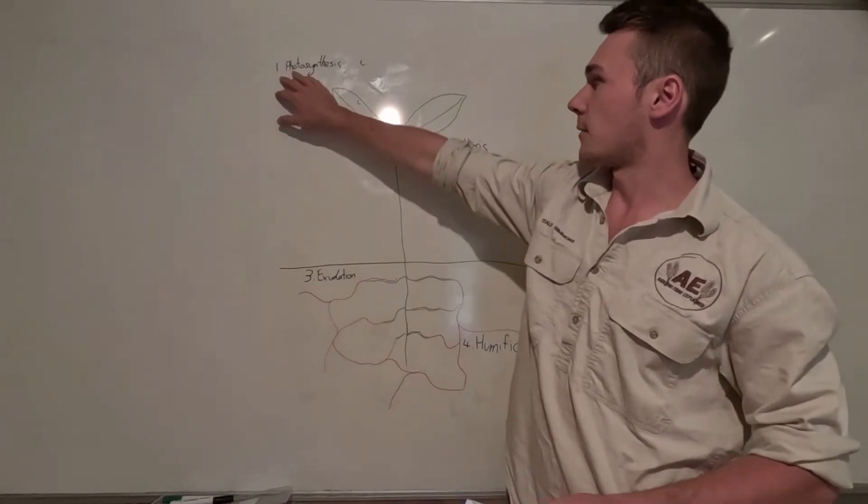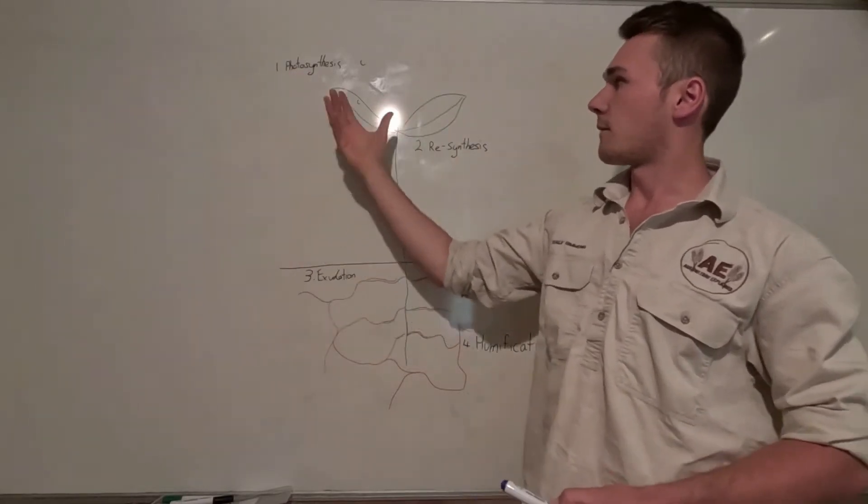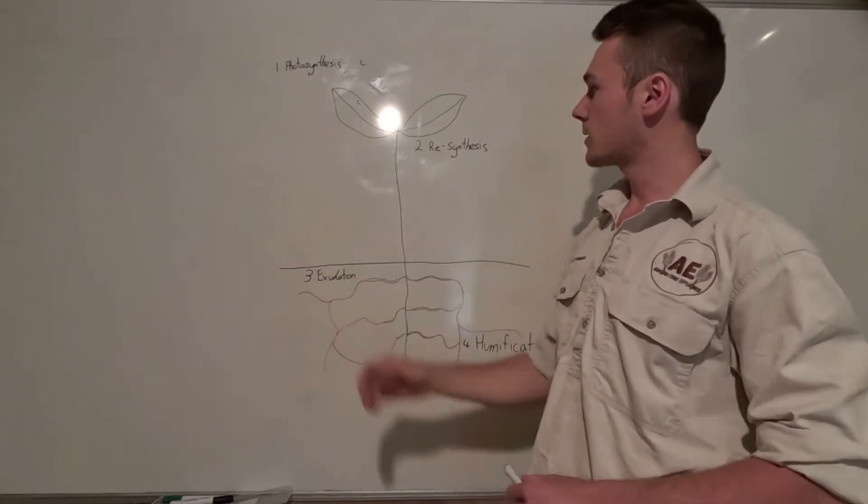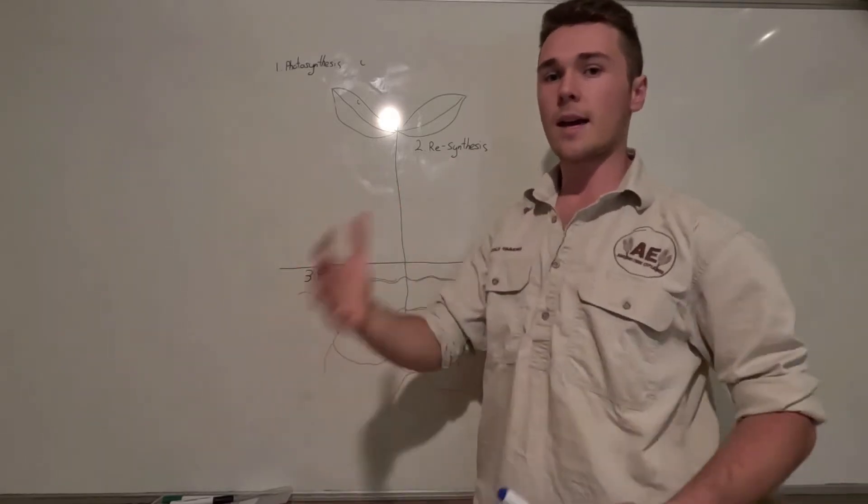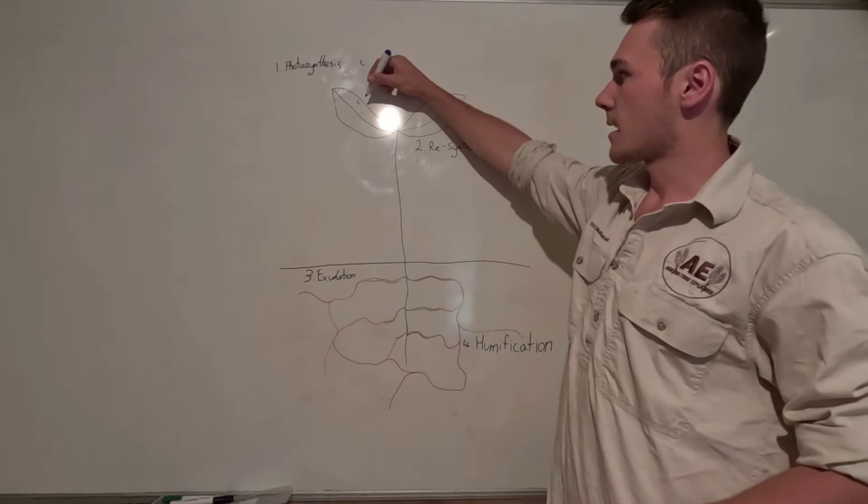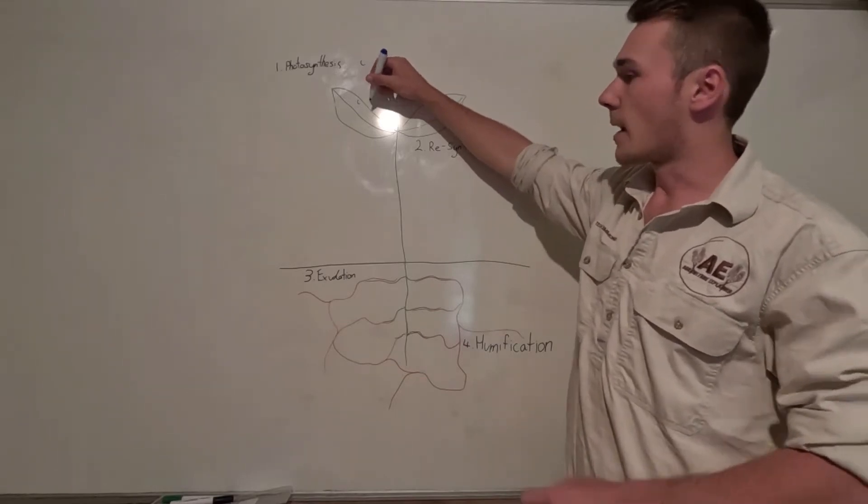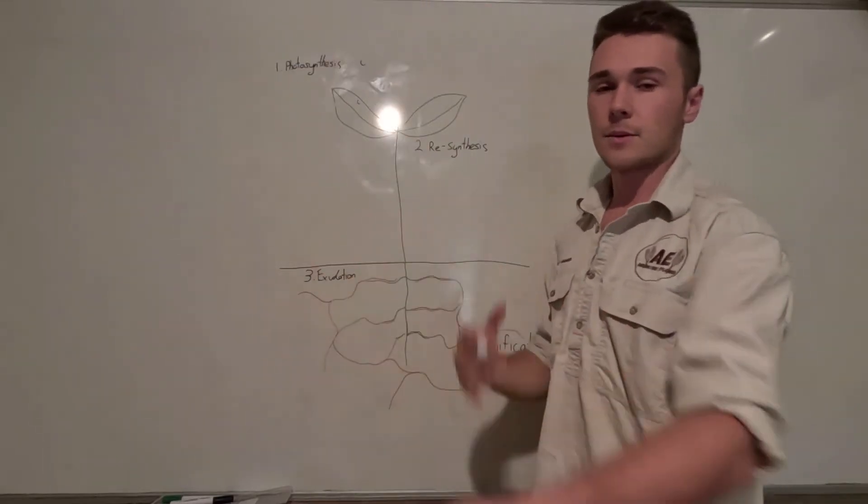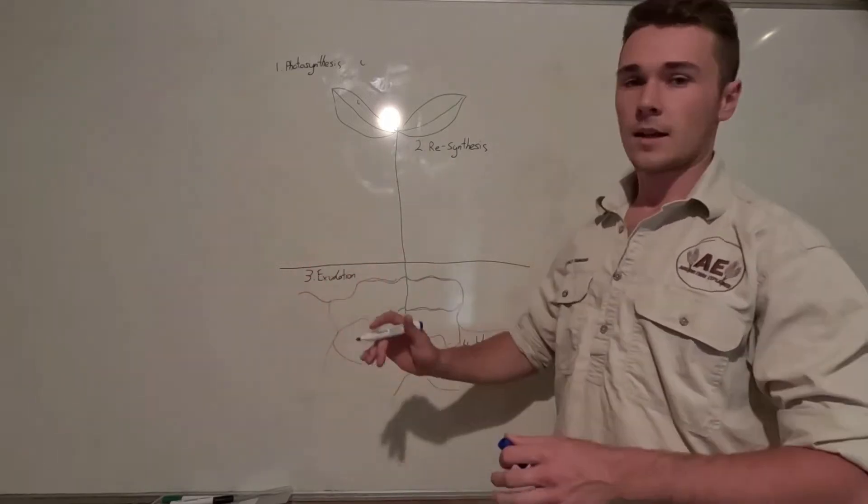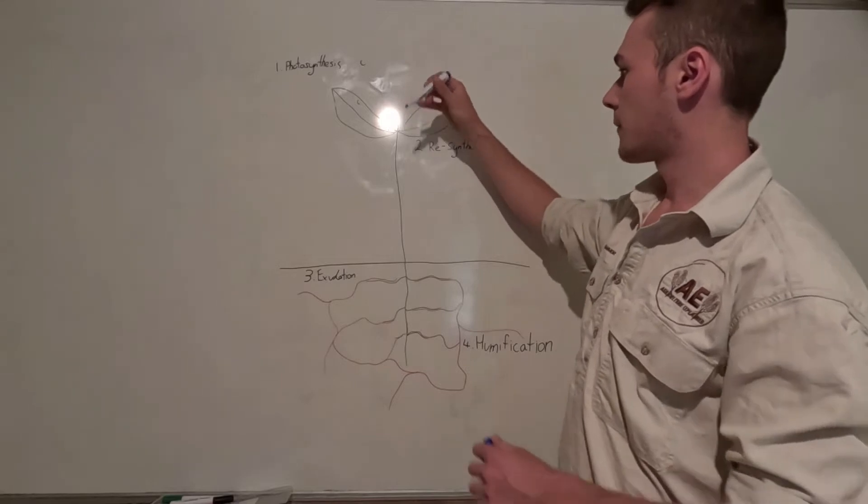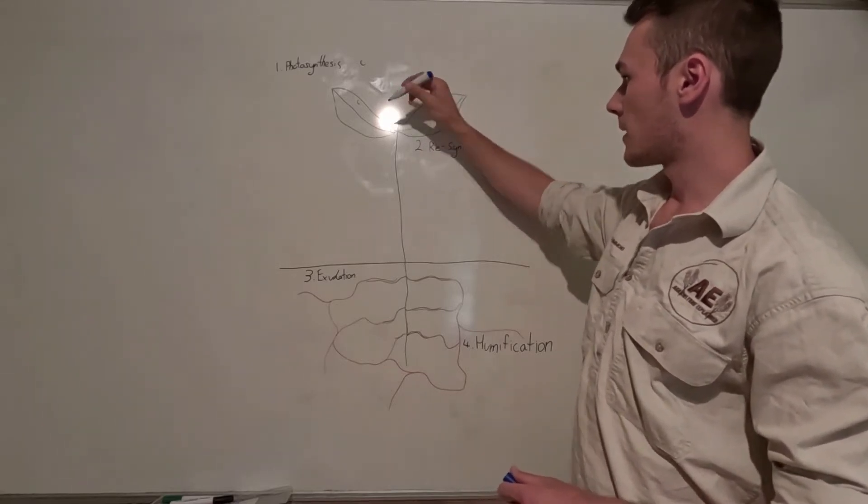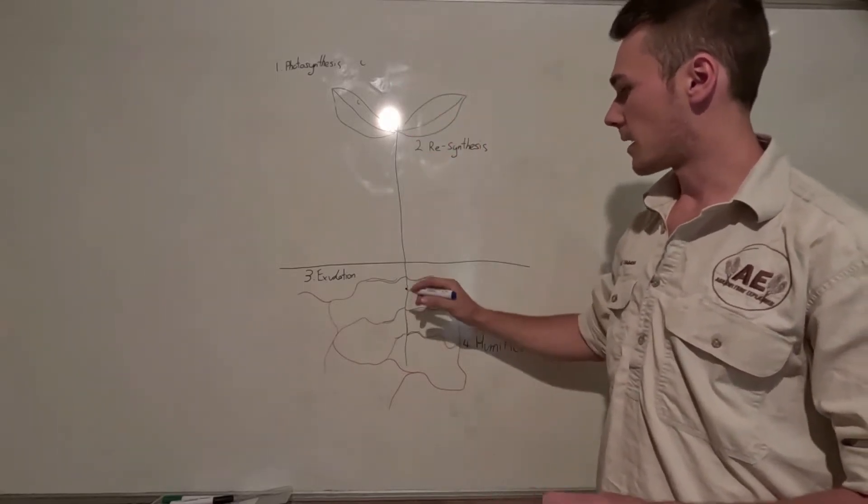That's our first step—photosynthesis—fixing the carbon into sugars. Then we have resynthesis, which is where that carbon is remade into other things. We're taking that glucose and making proteins, fats, lipids and other carbon-based compounds. That carbon is resynthesized into different carbon compounds and then pushed down into the roots.